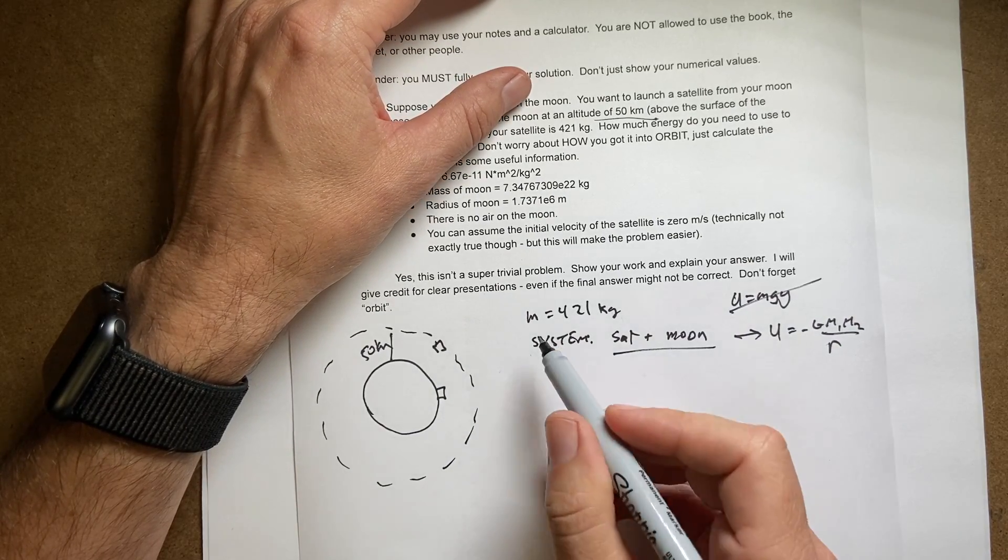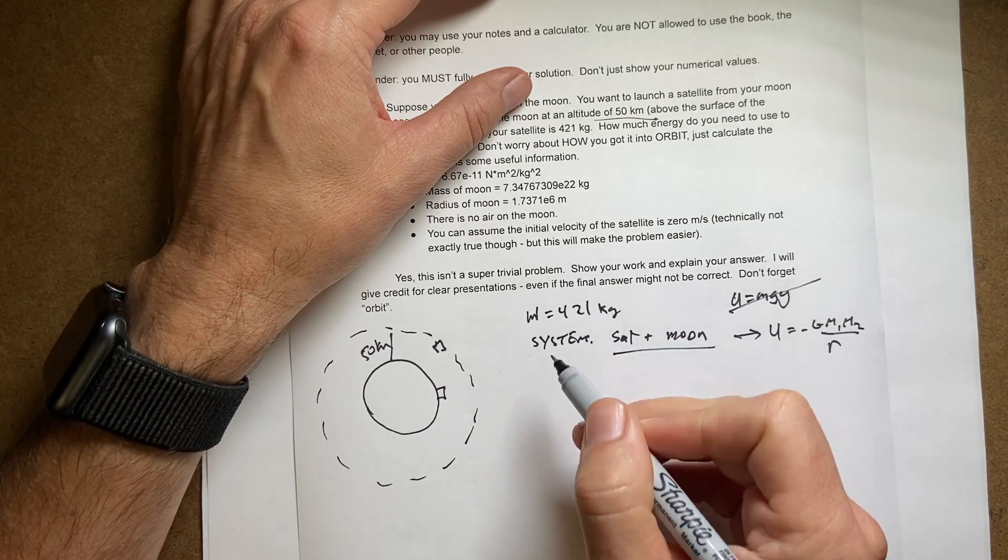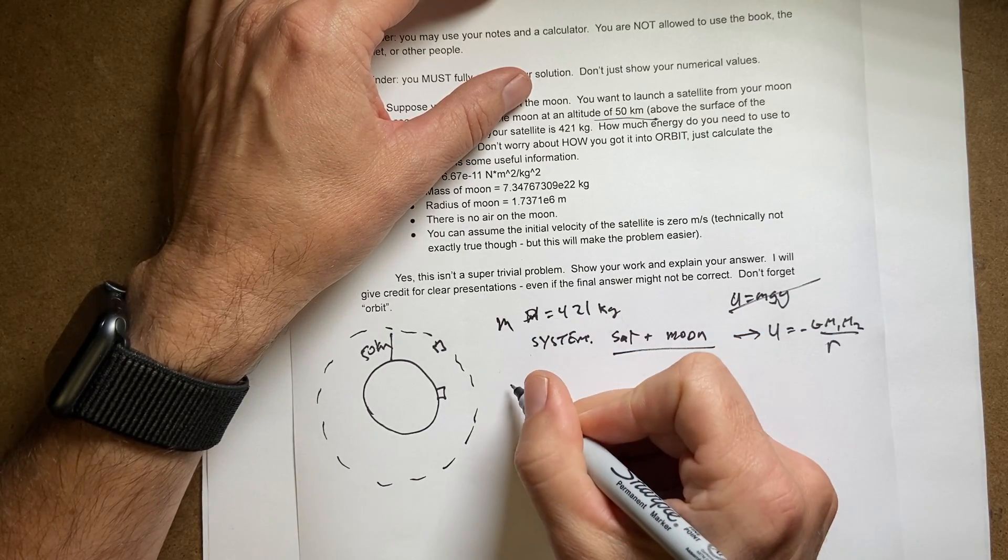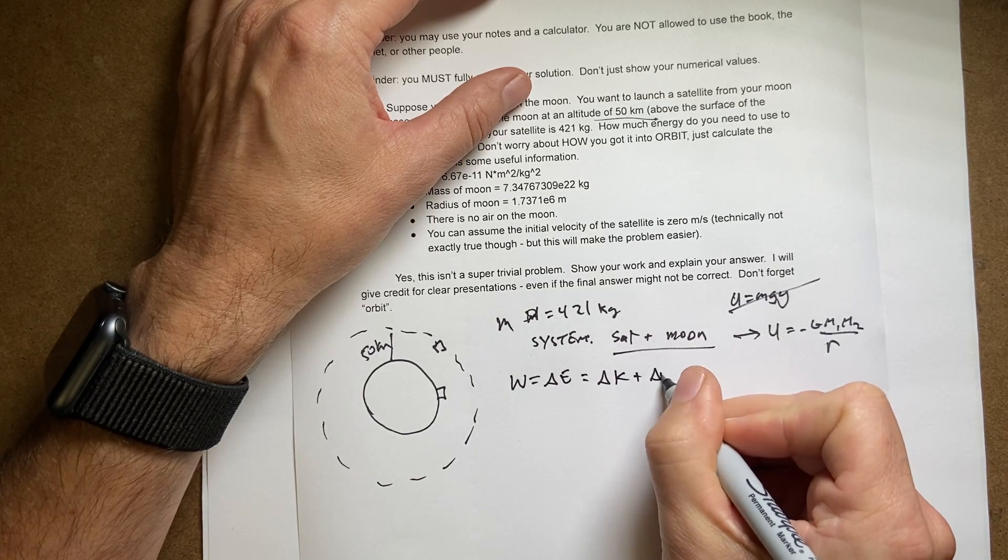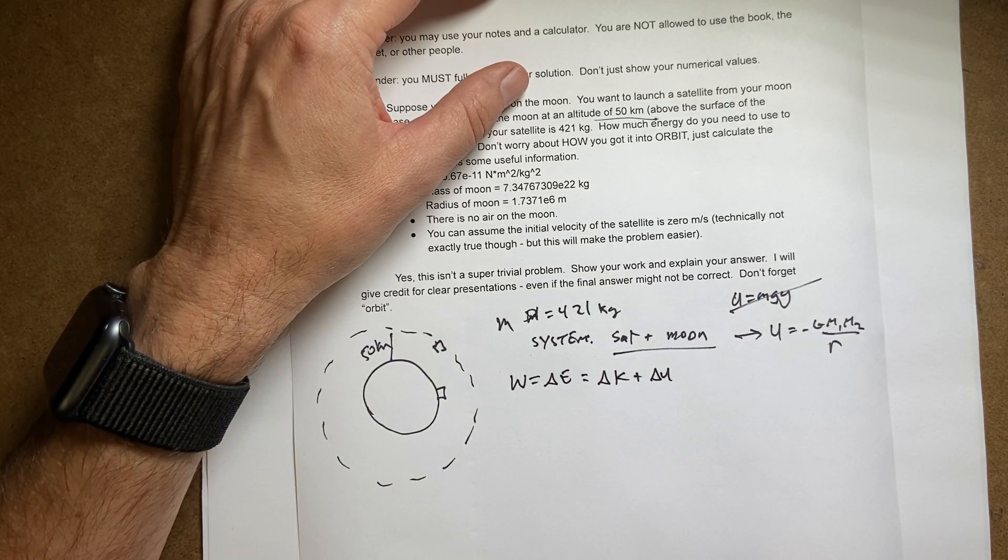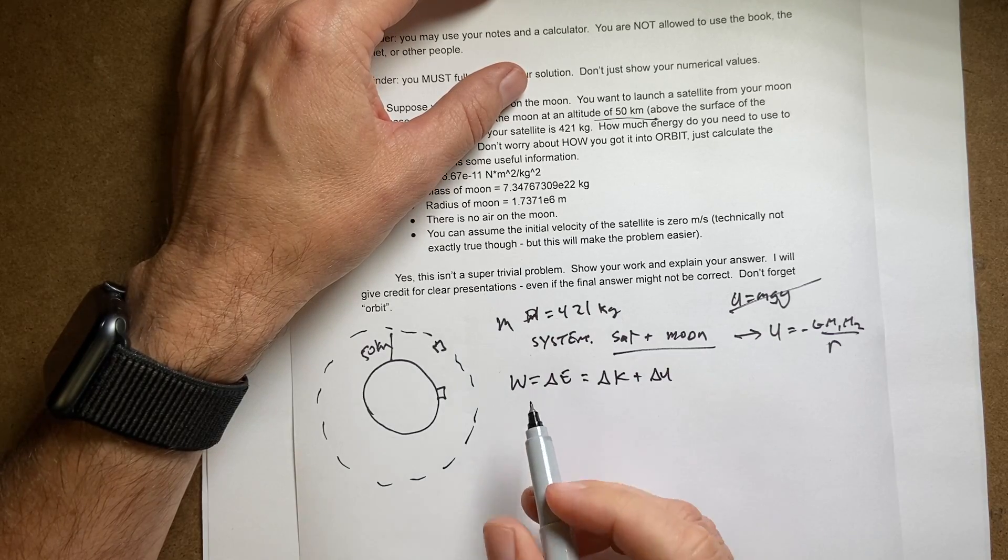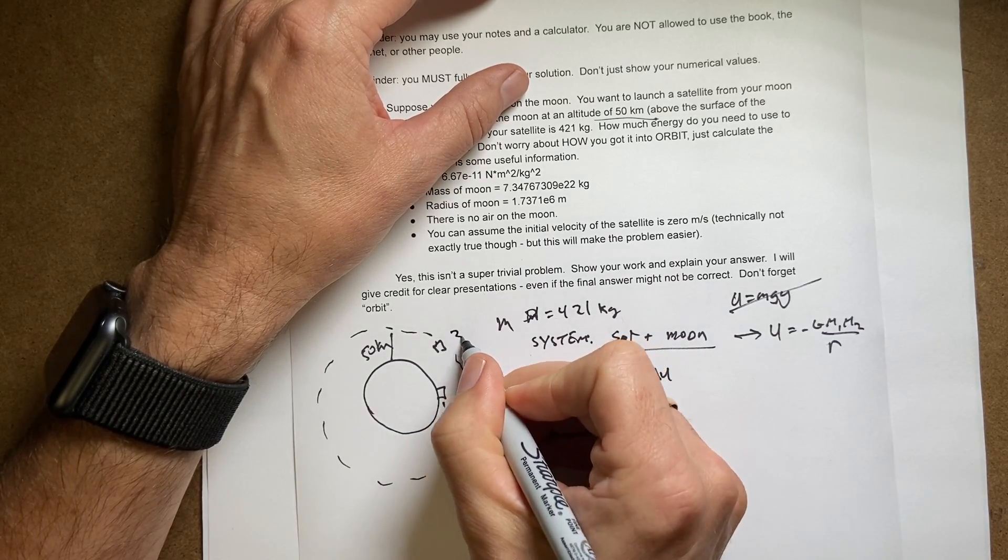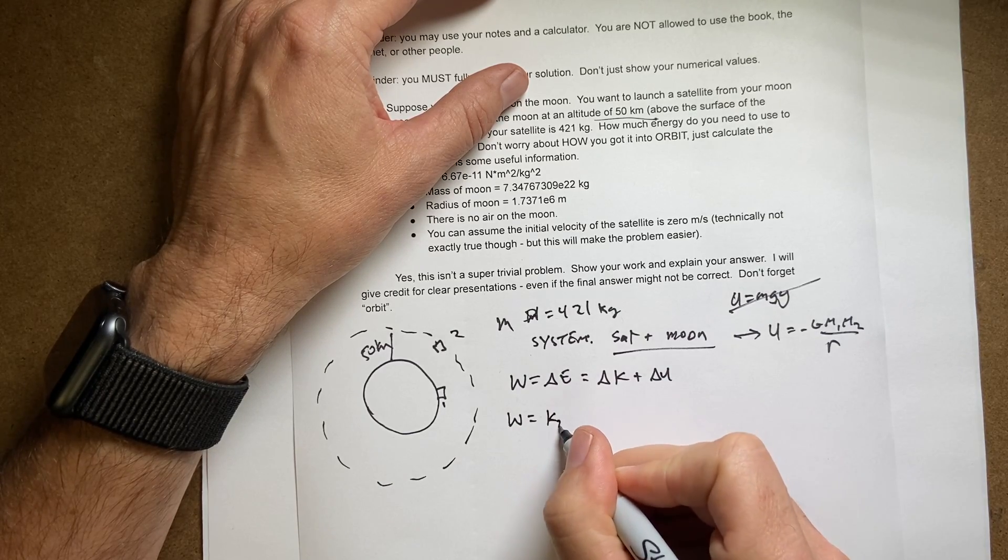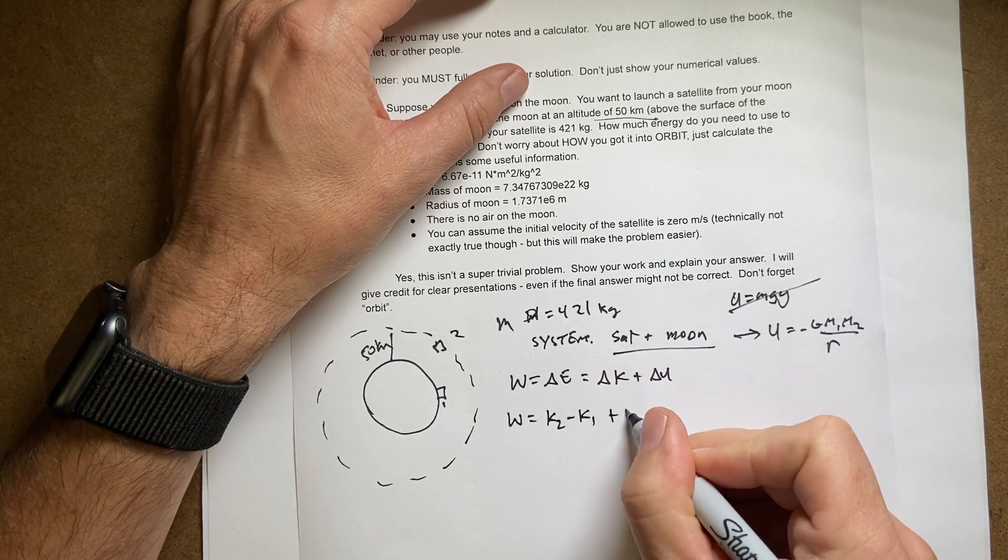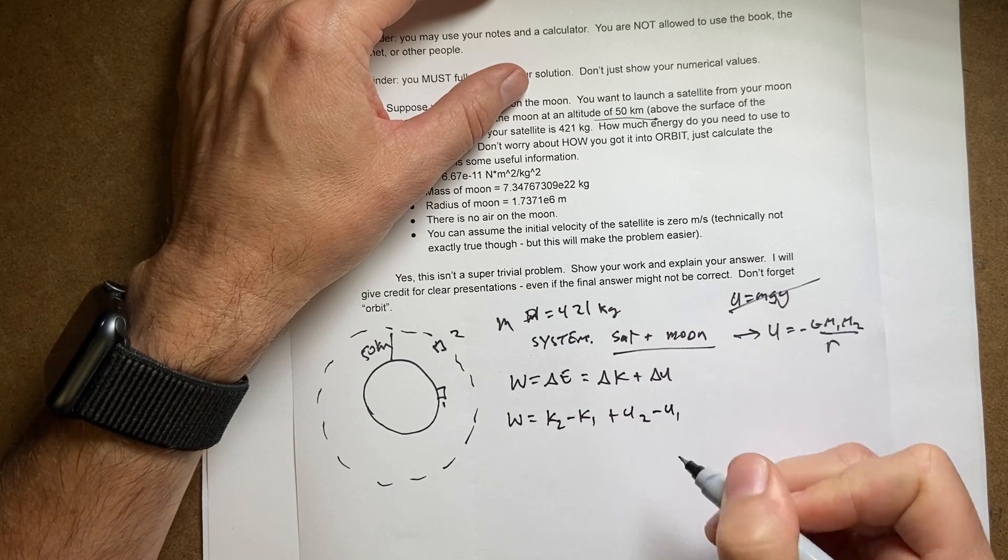So let's just say if that's the case, that's the mass. Now I can say work is the change in energy. It's going to be the change in kinetic energy plus the change in gravitational potential energy. And I want to find the work. So we'll call this position one and that position two. So work is going to be k2 minus k1 plus u2 minus u1.